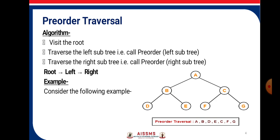Now considering this example, in pre-order traversal the root will come first, that is A, then we move on to the left part. In the left part we will write B, that is the root, then coming to the right subtree we will write E. After completing the left part of the tree, we will move on to the right part and there we will write the root C, then the left part F, then G. So the pre-order traversal that we get is A, B, D, E, C, F, G.